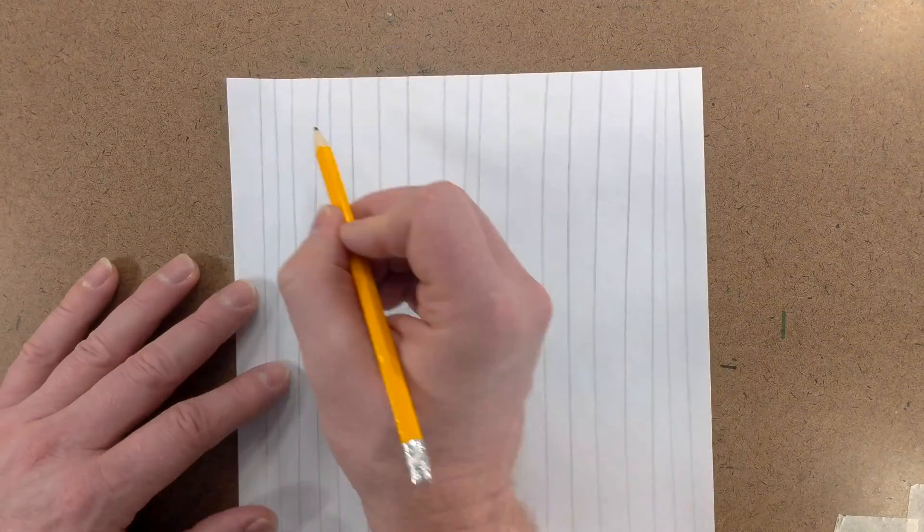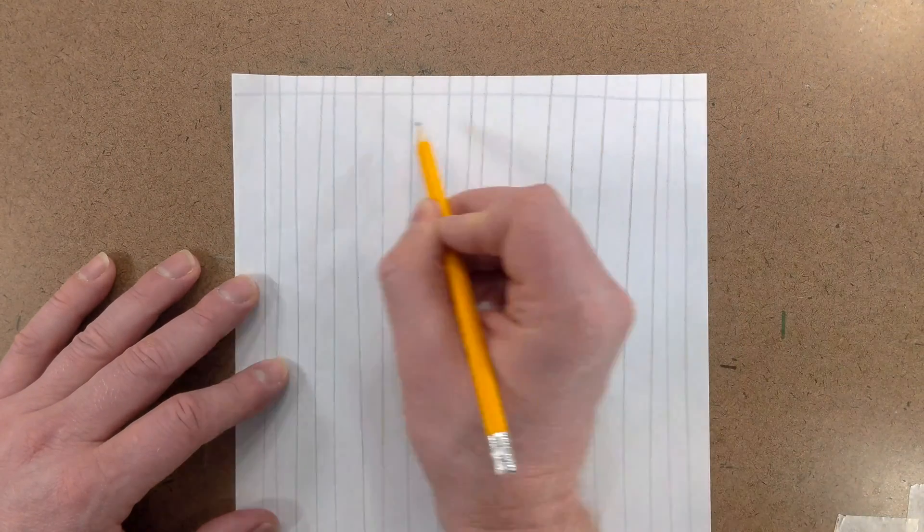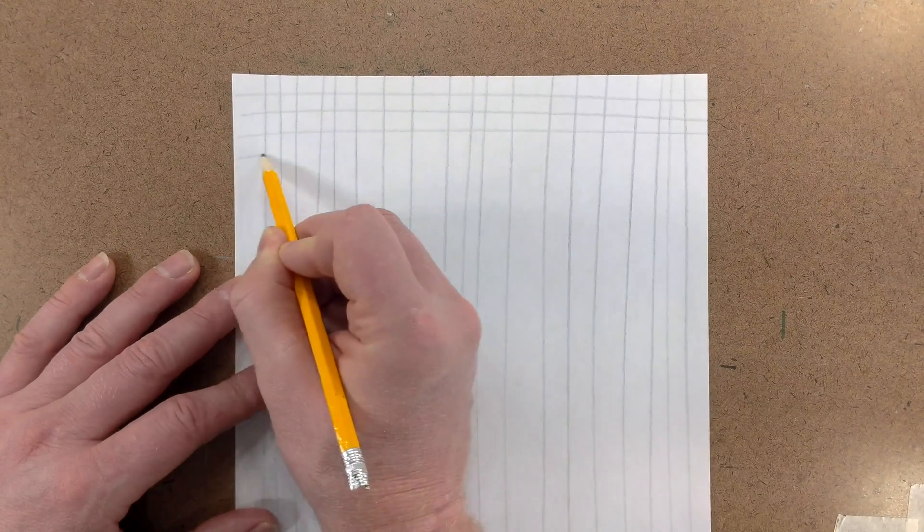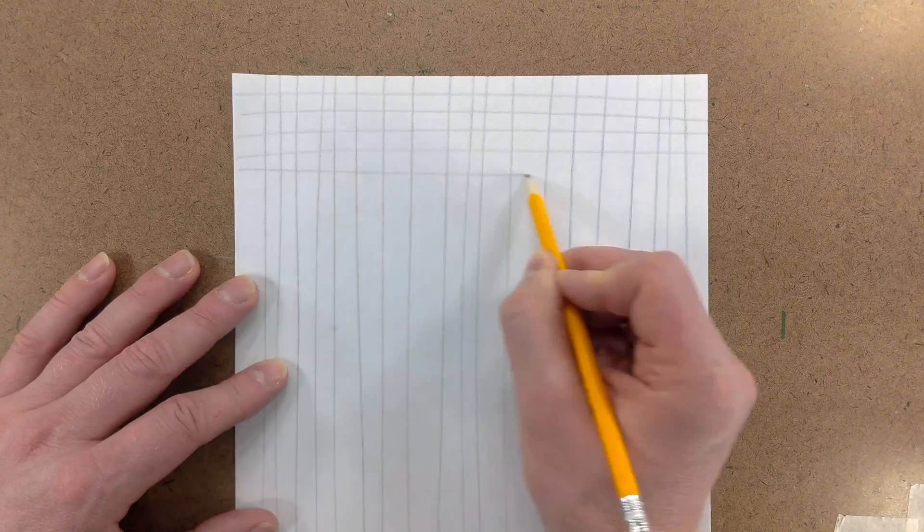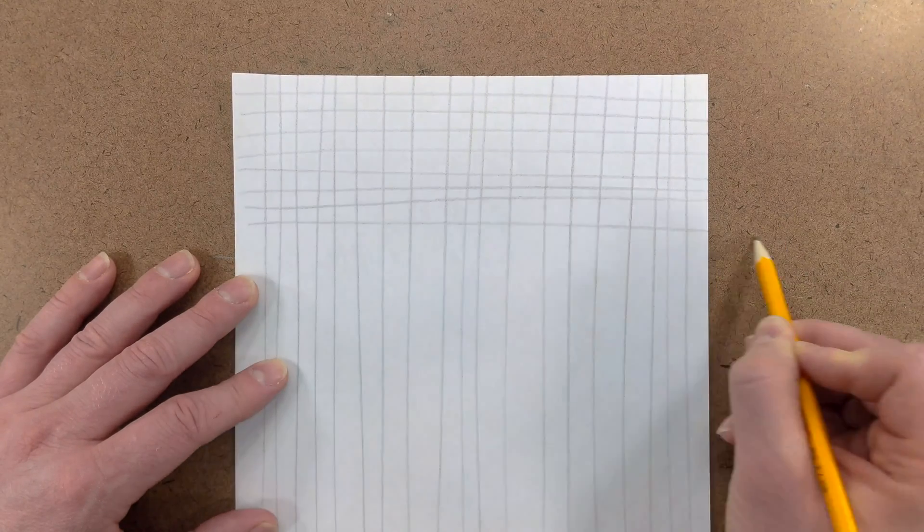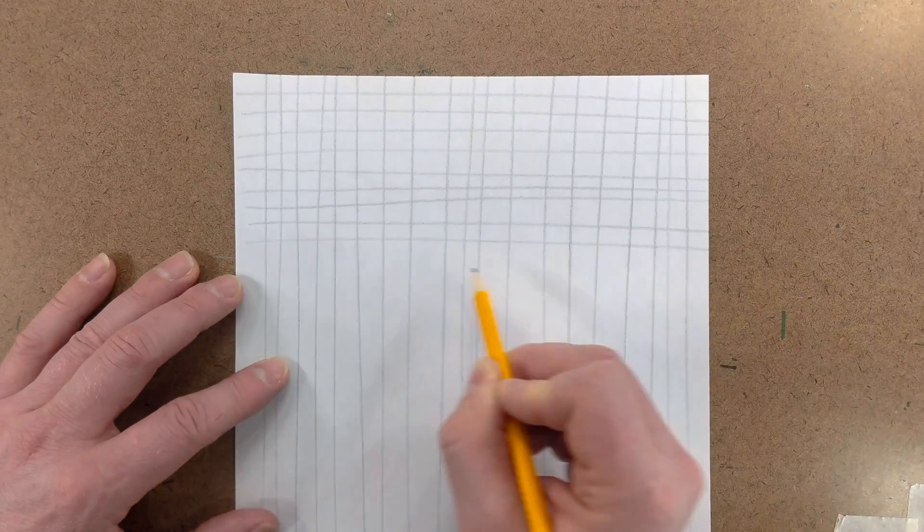Go ahead and flip the page and then start drawing lines across. Each one is a new opportunity to draw that perfect straight line. Again, if you mess up, then just draw one more straight one.